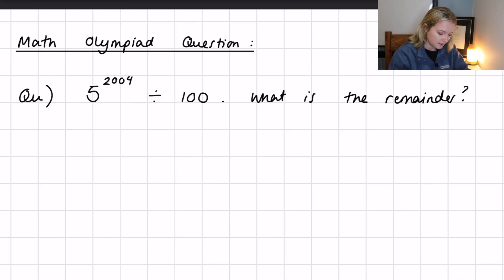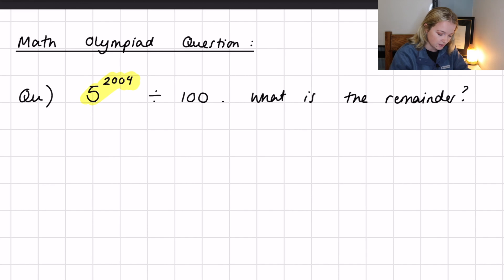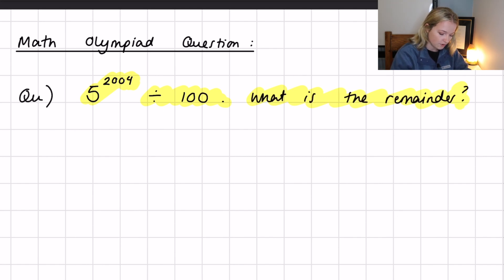We are tackling this problem here today, which says that we have 5 to the power 2004 divided by 100, and we're asked to find what is the remainder that is left over after we perform this operation.